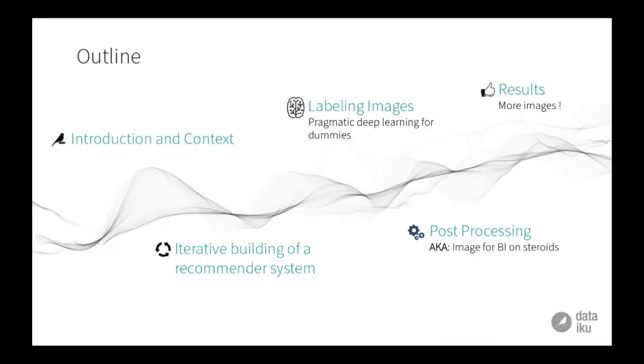What I want to talk about is mostly how to do that in a very pragmatic fashion without having to reinvent the wheel, train your own models, define your own architecture, if you're a company that doesn't come from GAFA. Then we're going to talk about post-processing, which is kind of how to use images for business intelligence. And finally, we'll see some more results, some images, and so on.